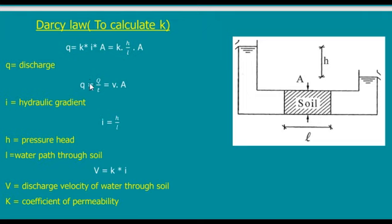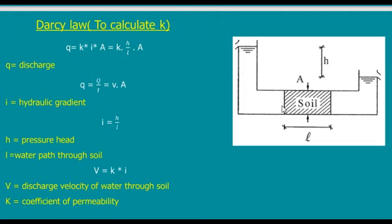The hydraulic gradient is the rate of transfer of water pressure — it is the difference in head between two points. If I have a head h, that is the difference, but it is called a gradient because if this h is acting on a sample of length L, it is not the same as acting on a sample of length 2L or 3L. A longer sample needs a higher head to push water through. That is why the hydraulic gradient is h divided by L.